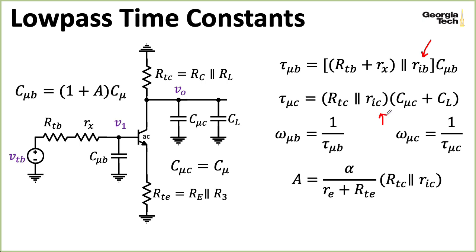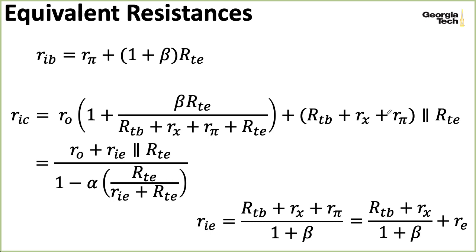So we do need to compute things like RIB and RIC. So I've summarized the formulas for such things on this slide, just so this presentation can be somewhat self-contained. So here I have RIB, two different formulas you can choose from for RIC. And the second formula requires this RIE computation. One thing I want to point out is that we are having to explicitly add in RX here. So there's our base spreading resistance and we're not automatically lumping it in with TB. We're adding that explicitly.